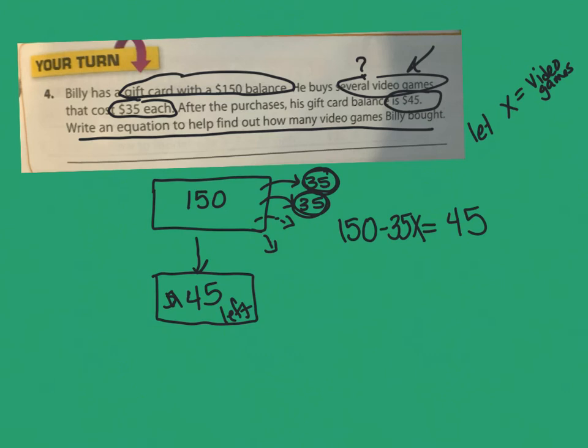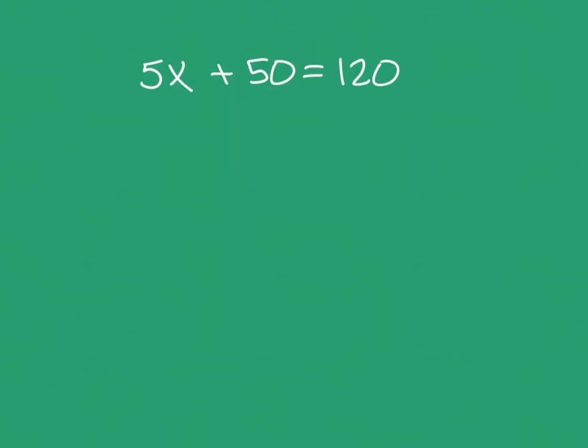You could solve it to find out how many video games he bought. But again, this lesson just wants us to be able to do that. So, you could be done. So, the last part of this lesson, and I think this is a really smart idea, is to have you reverse it and say, okay, here's the equation.